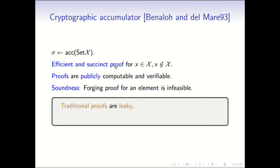If this setting already handled the problem of proof leakage — in other words, if the proofs were not leaking any information beyond membership and non-membership — we could easily deploy this to solve the zone enumeration problem. But unfortunately, traditionally in the literature, accumulators are not concerned with this security property. The security that has been considered is soundness, which means forging a proof for an element is infeasible. So if an element is present, a secondary will not be able to prove that it is not, and vice versa.